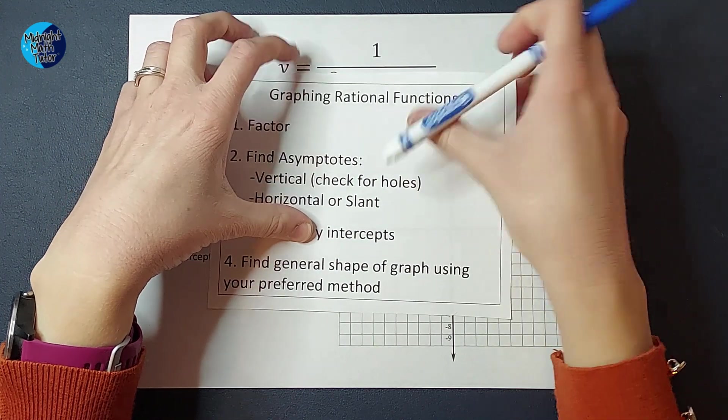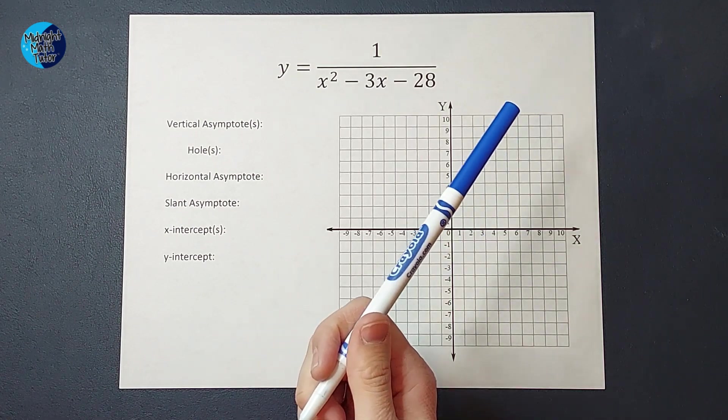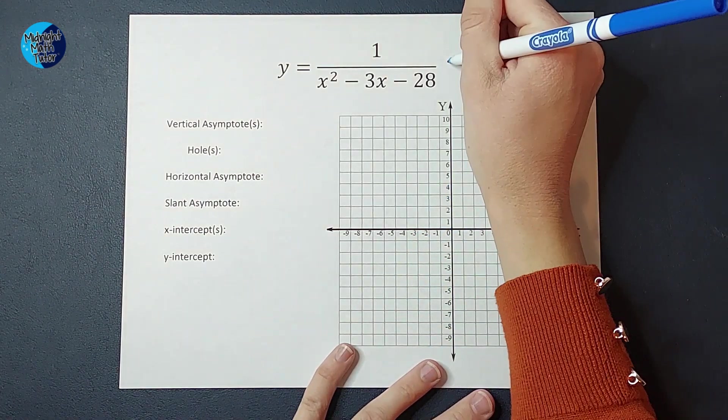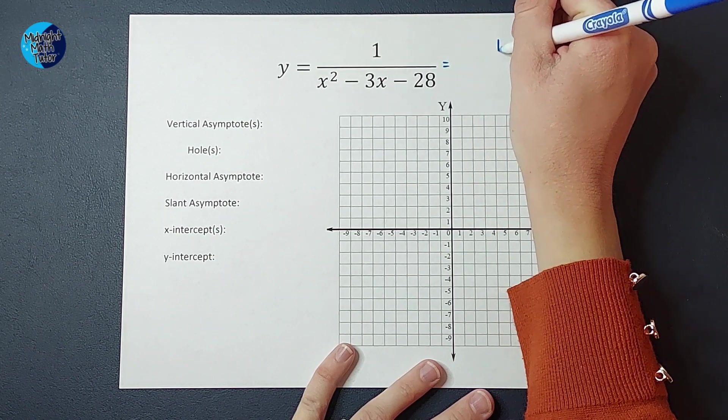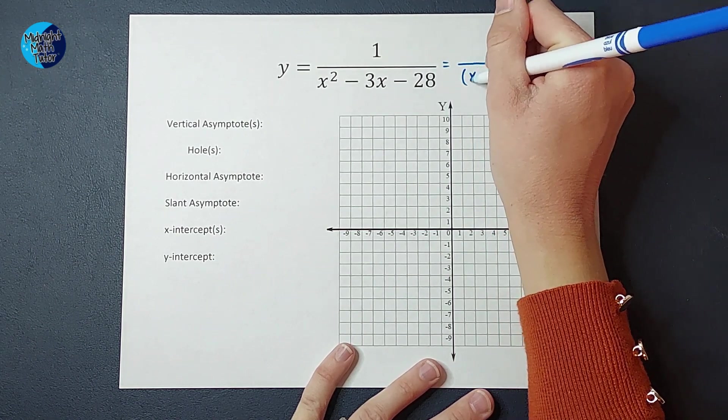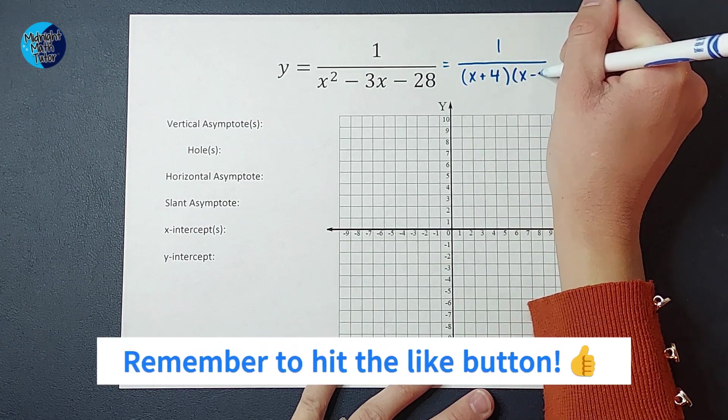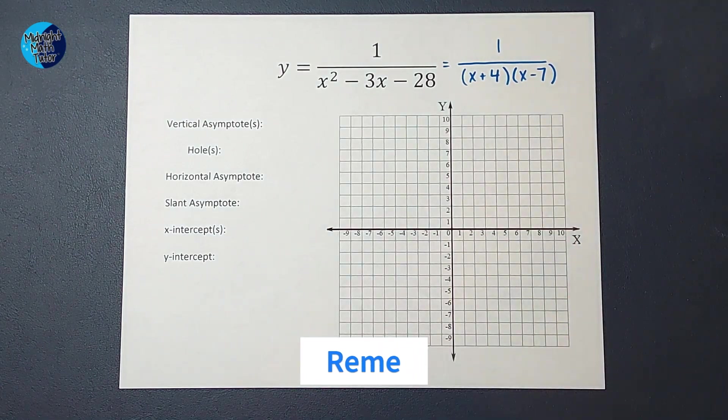So first thing I'm going to do is factor. Obviously, the top doesn't need to be factored, but the bottom can be. I will link a factoring review in the corner if you need it. But I'm just going to tell you right here, right now, that the bottom factors to x plus 4 times x minus 7. All right, step one, done.